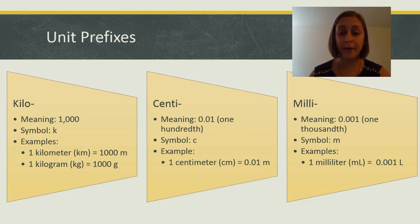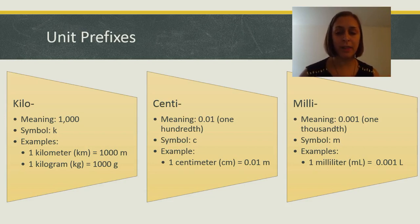Milli means one thousandth or .001. The symbol is M. One milliliter equals one thousandth of a liter. One millimeter equals one thousandth of a meter as well.